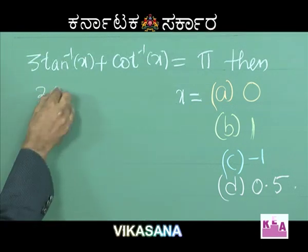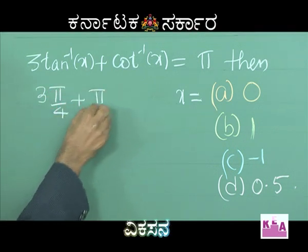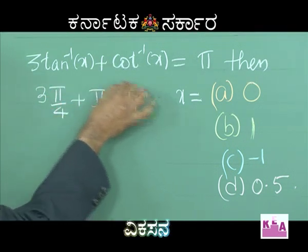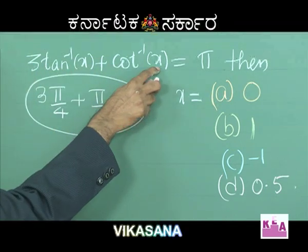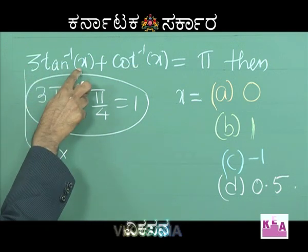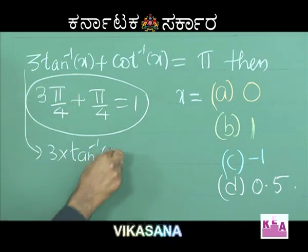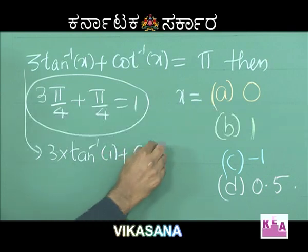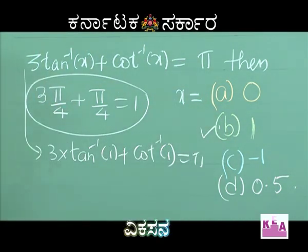3 pi by 4 plus pi by 4 is equal to 1 — but how? Put x equal to 1. Then 3 times tan inverse of 1 plus cot inverse of 1 equals pi, using x equals 1. Therefore option B is correct.